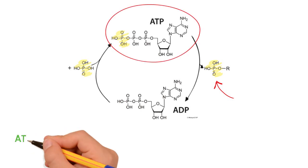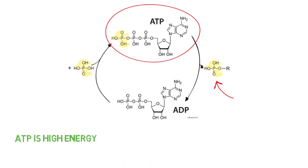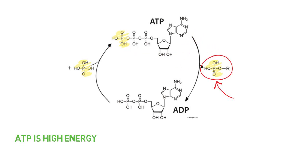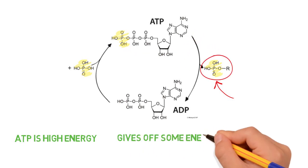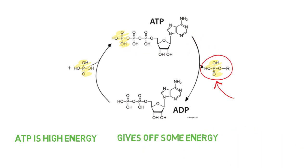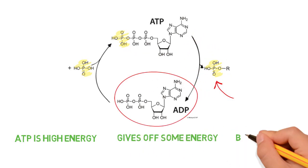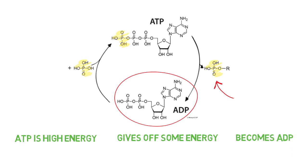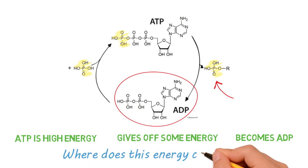Essentially, ATP is a high energy compound that gives off some of its energy and becomes ADP, a low energy compound. But where does ATP get this energy?